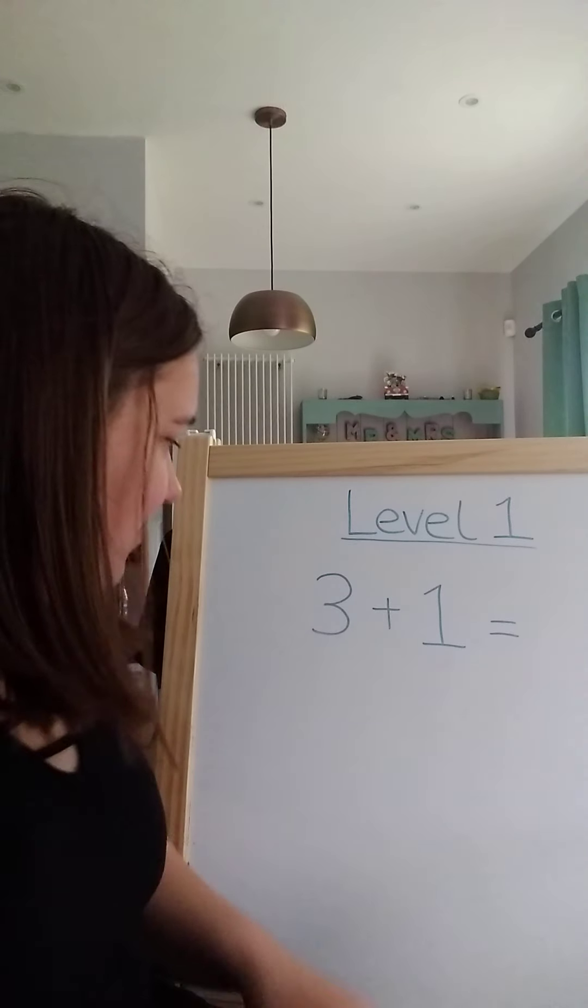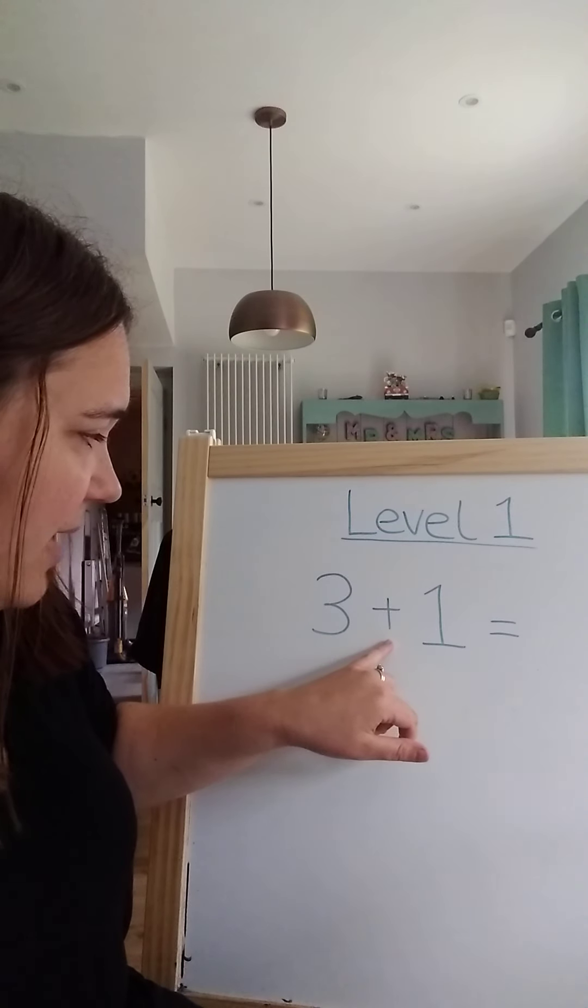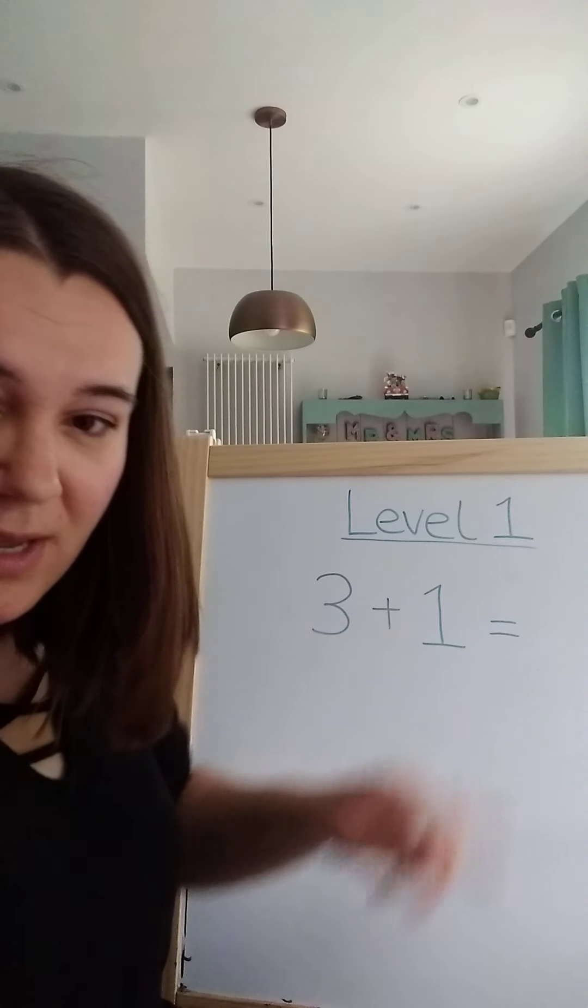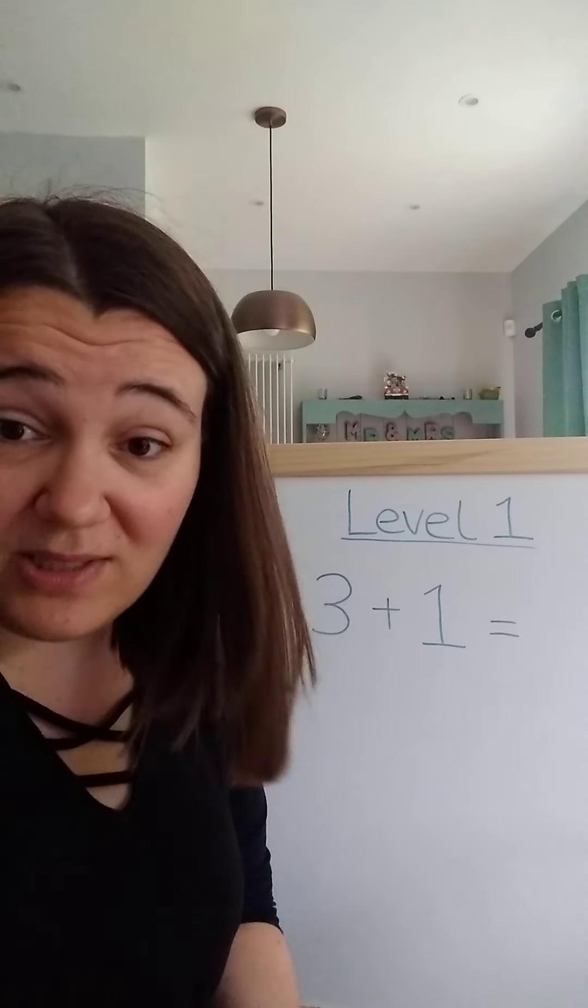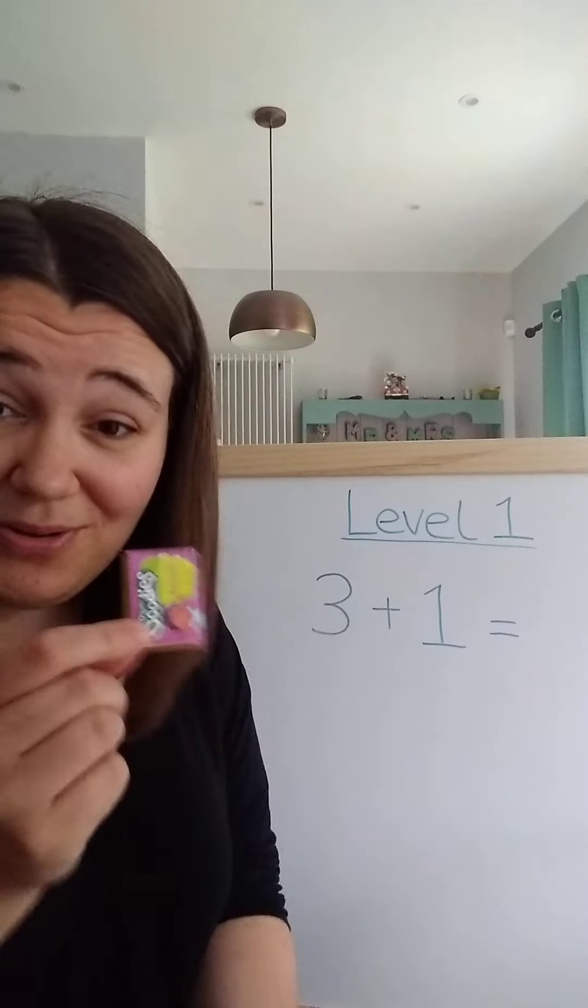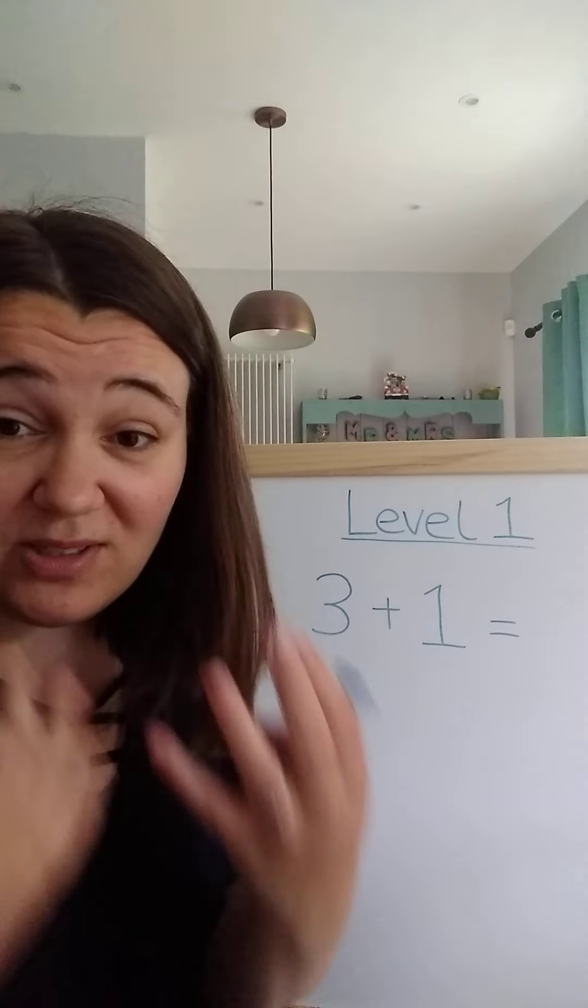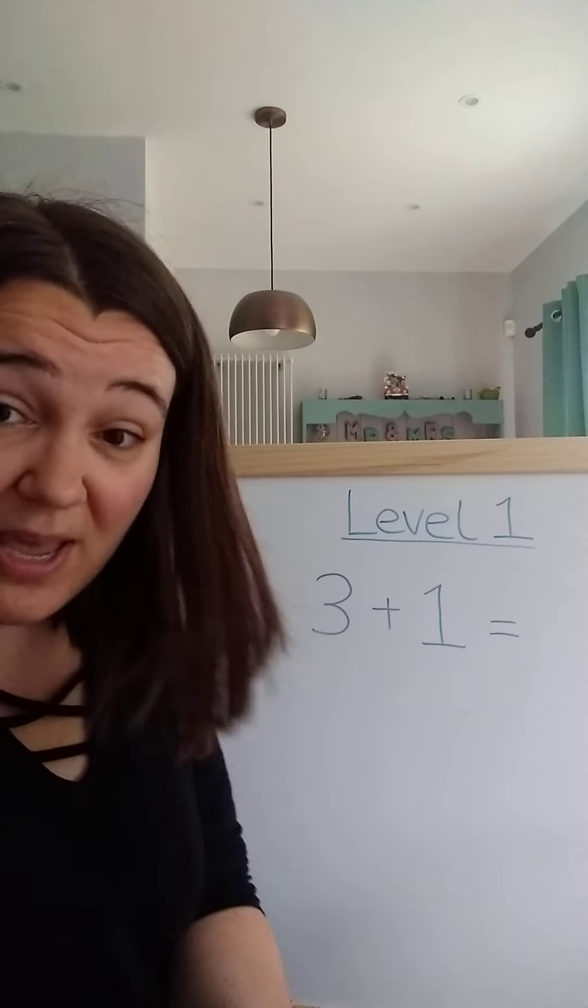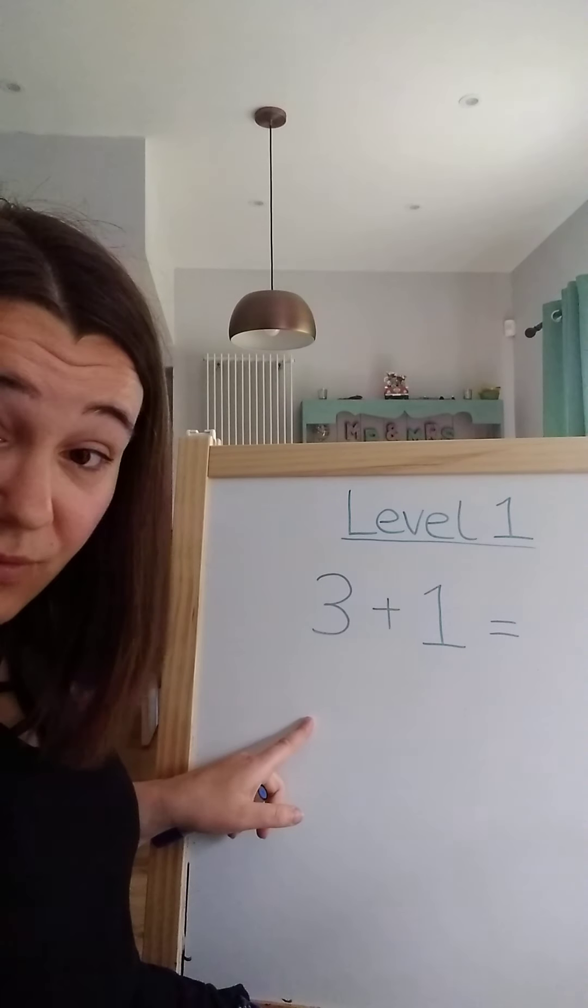Let's have a look at the first one. We have three add one equals. What I would encourage you to do is find things to add with. Today I've got my daughter's raisin boxes. You can do this simply - you could write a sum on a piece of paper. I have given you one in the learning pack this week. This is how I would start. How many have we got here? Three.